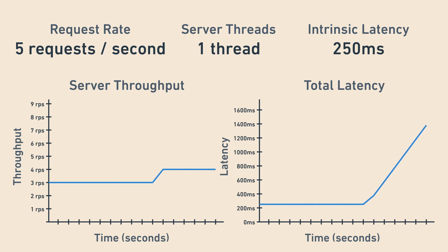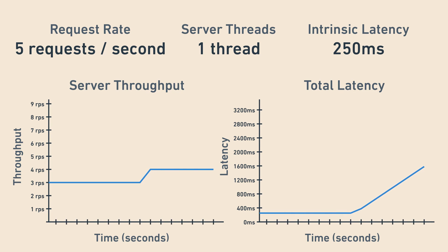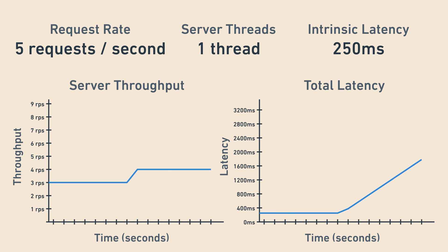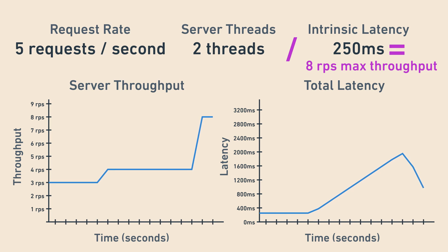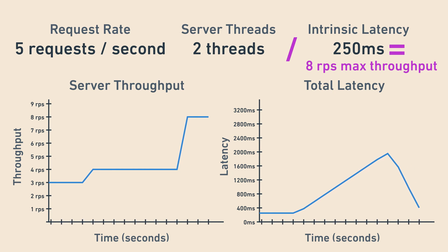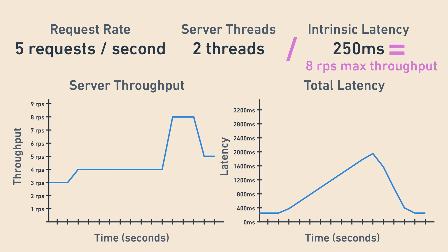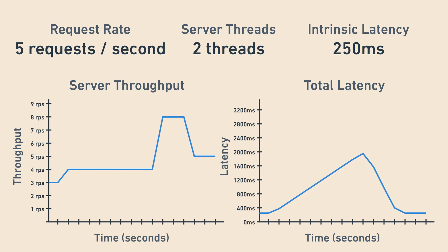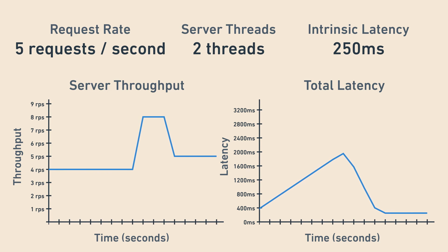You can see how quickly latency spikes because the server is just falling further and further behind. To fix this, let's increase the number of threads from one to two. Now the max throughput is two threads divided by 250 milliseconds, which equals eight requests per second, and you can see throughput double as expected. Eight is greater than five, so the server clears its backlog and latency eventually comes back down to 250 milliseconds — the intrinsic latency.